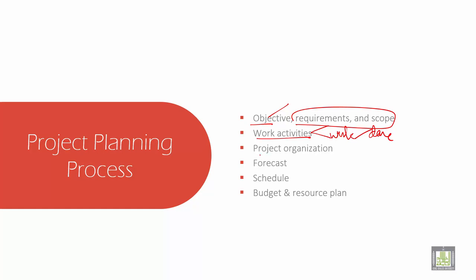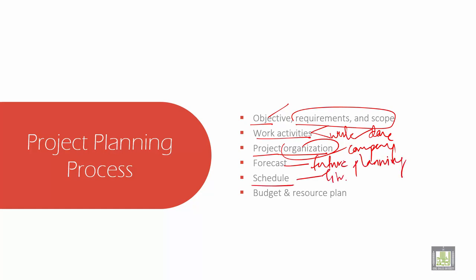Then it talks about the project organization — the company and its role. Then forecast, which means future planning. Then it talks about schedule, which is the time. Then budget and resource plan: the budget talks about cost, and the resource plan covers how you manage those costs and resources to continue your project.